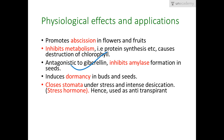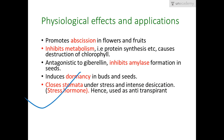Gibberellin mobilizes nutrients by synthesizing amylase and proteases, but abscisic acid works antagonistically — it inhibits amylase formation in seeds. Abscisic acid also induces dormancy in buds and seeds, and it closes stomata under stress and intense desiccation, which is why it is known as the stress hormone.